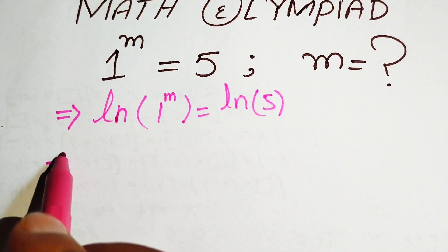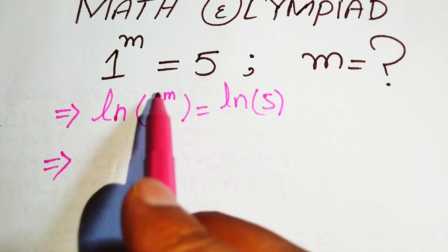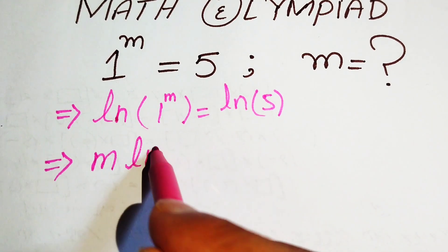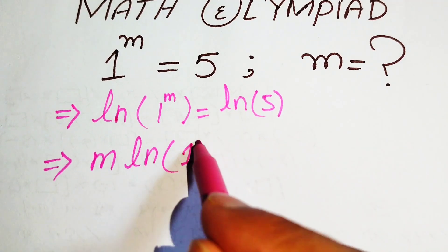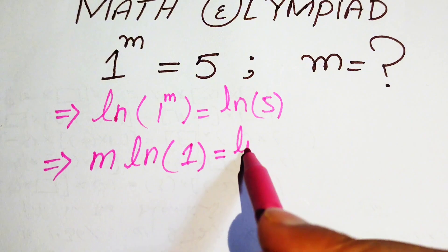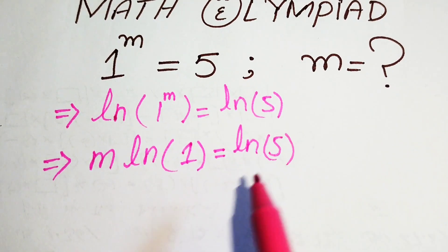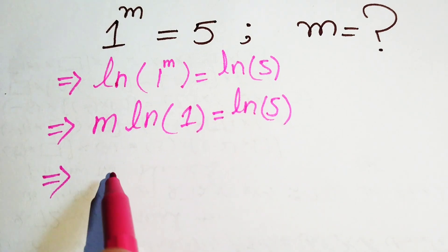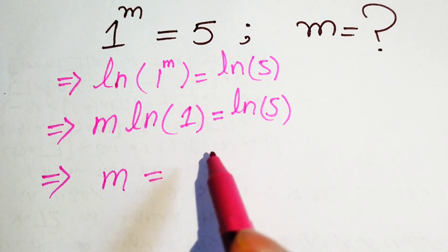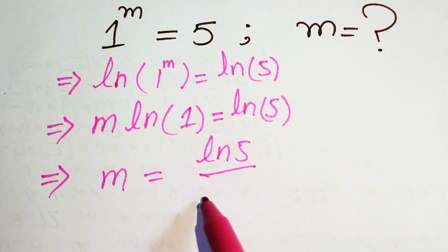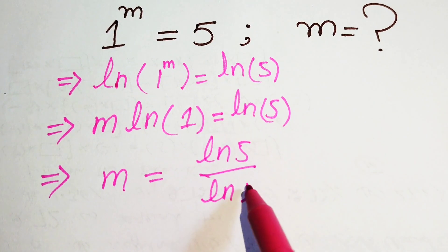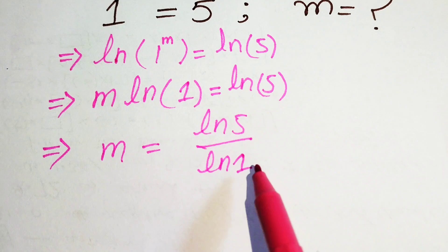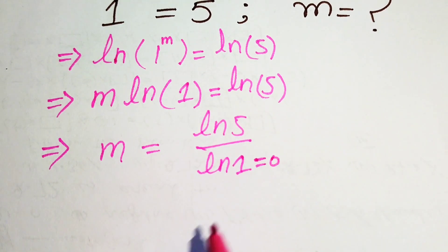We use the property of log and move the exponent m to the front, so it becomes m times log 1 equals log of 5. We then move log 1 to the right-hand side, giving m equals log 5 divided by log 1. The value of log 1 equals 0.